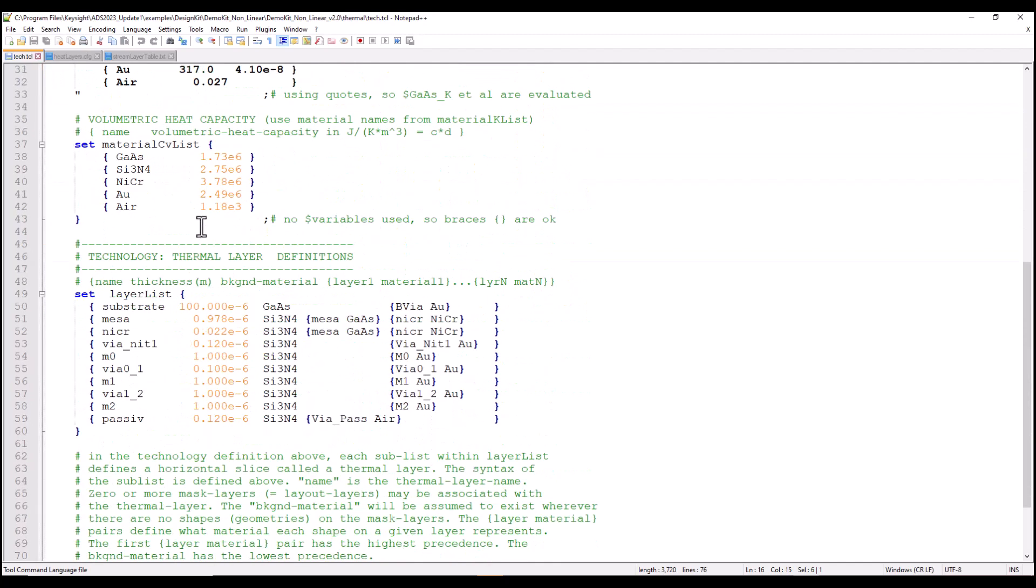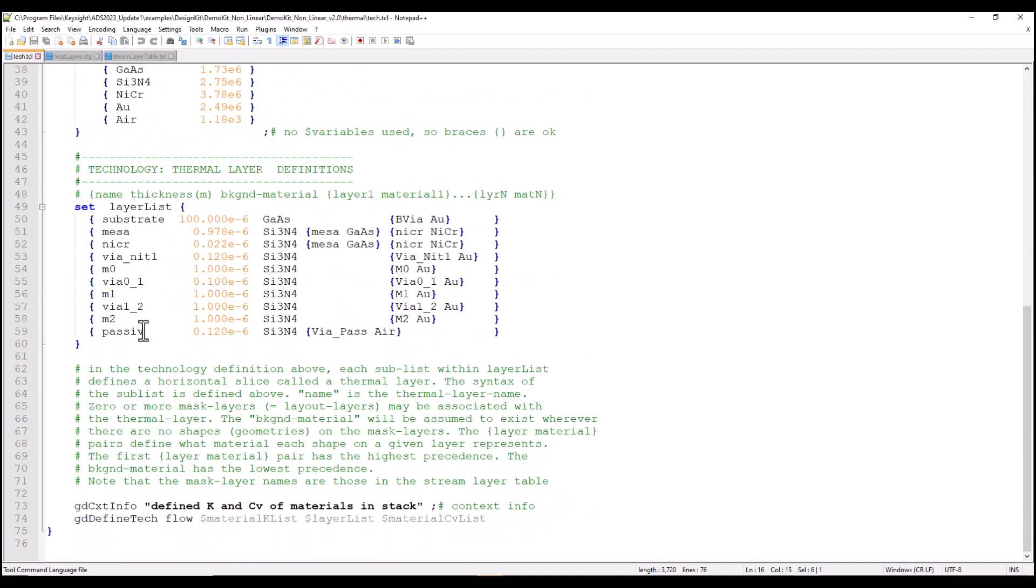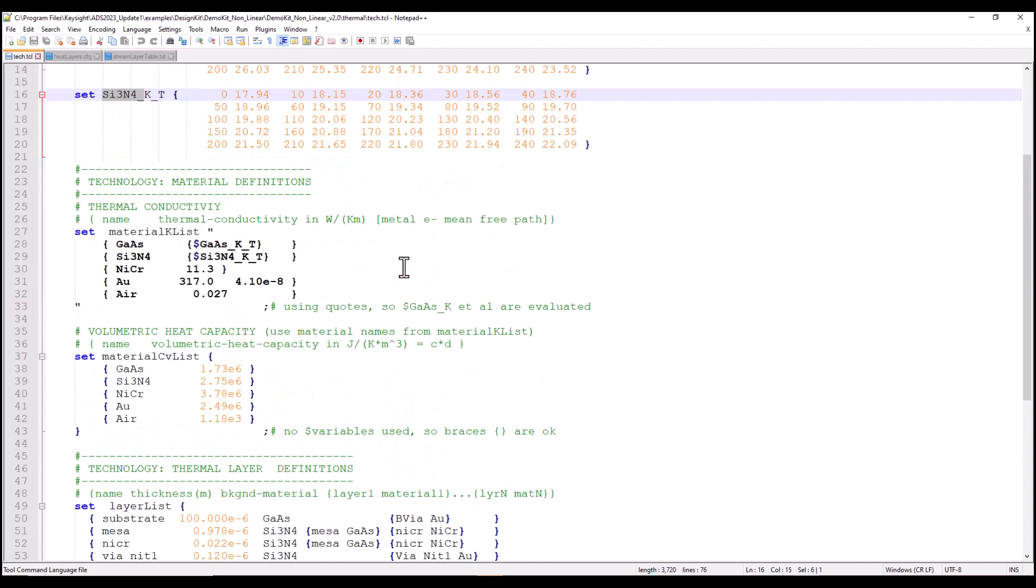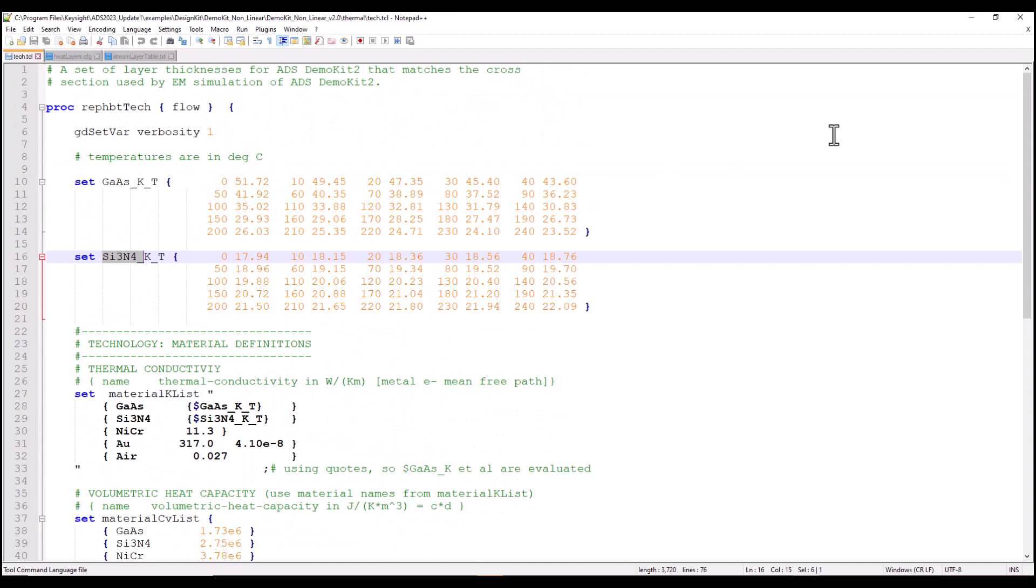You can see gallium arsenide and its temperature dependent conductivity and similarly for silicon nitride and so on. And here again you have the material volumetric heat capacity table and these are the layers in your stack up and the relevant thickness information background material and the layer information and so on. So this forms the basis of the electrothermal analysis which we have done.